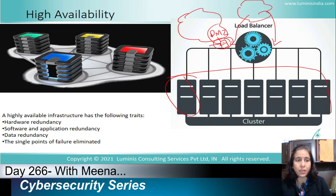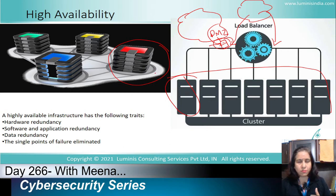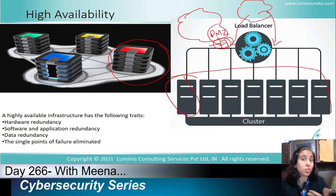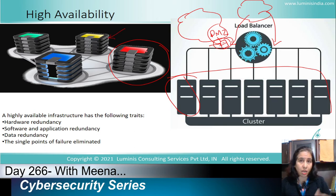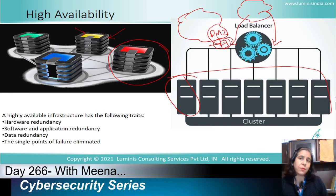Data redundancy is another way to achieve high availability. If our data is lost or encrypted by cyber criminals using ransomware, we must have copies of that data on other devices — either at an off-site location or in another part of the network — so it can be provided when we need it quickly.